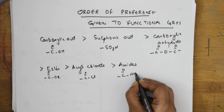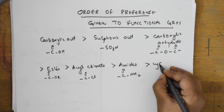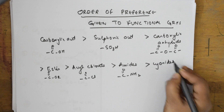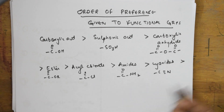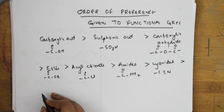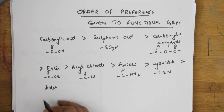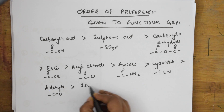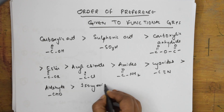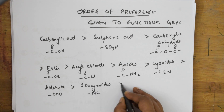After amides, the next preference is given to cyanides, whose formula is C triple bond N. After cyanides, the next preference is given to aldehydes. The formula for aldehydes is CHO.